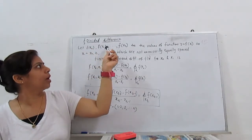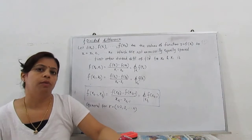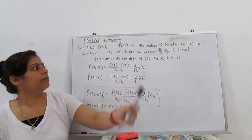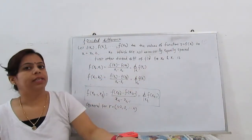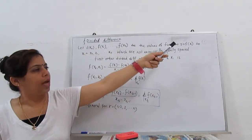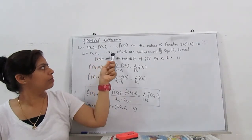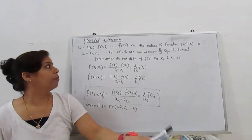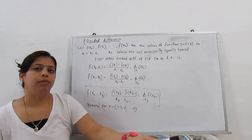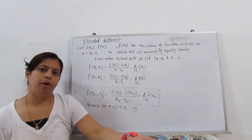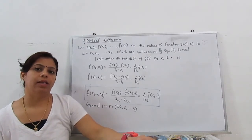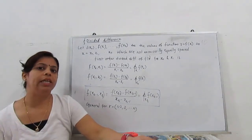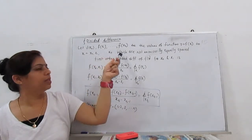Let f(x0), f(x1), ..., f(xn) be the values of the function y = f(x), meaning y0, y1, and so on. When we put in x0, we get f(x0); put x1 respectively at points x0, x1 to n. These points are not necessarily equally distributed — for example, x1 minus x0 could be 1, x2 minus x1 could be 4, and x3 minus x2 could be 2. They are not equally placed; the differences between them vary.